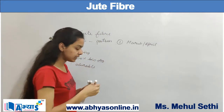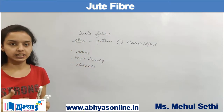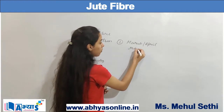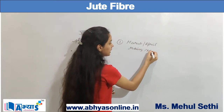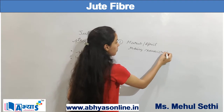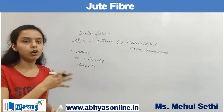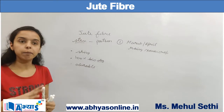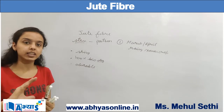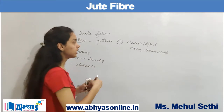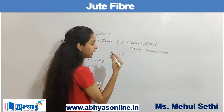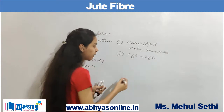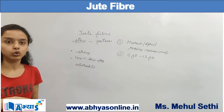Because the seeds are sown at the beginning of the rainy season, jute is sometimes referred to as a rainy season crop. When the seeds are sown they become mature and reach a certain height — the height of the jute plant ranges from 6 feet to 12 feet, making it a very large plant.